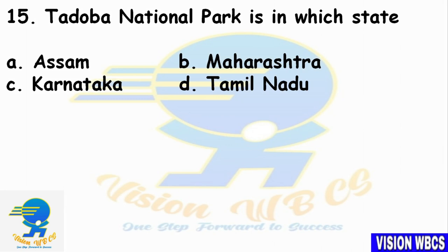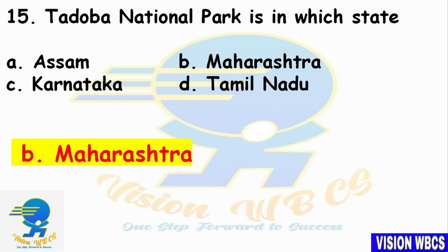Question 15: Tadoba National Park is in which state? Option A — Assam. Option B — Maharashtra. Option C — Karnataka. Option D — Tamil Nadu. The right answer is Option B: Maharashtra. Tadoba National Park is located in Maharashtra.